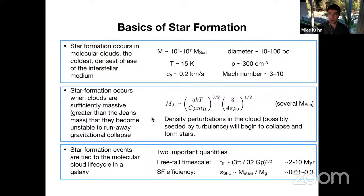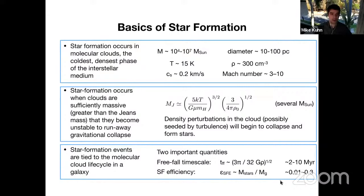Both where and when stars form are closely tied to the evolution of the molecular clouds. Important parameters include the freefall timescale — the time a cloud would take to collapse under gravity, related to cloud density — and the star formation efficiency. In most molecular clouds, star formation efficiency is rather low; only a small fraction of the cloud mass ends up converted into stars in each event.